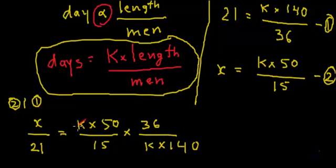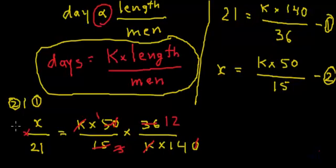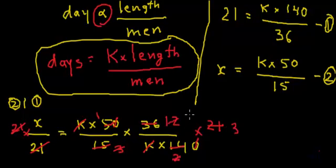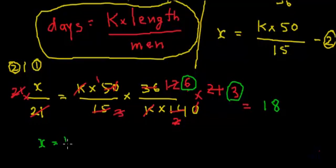Now k cancels with k. Simplifying: 50 and 140 — the zero cancels, giving 5 over 14; and 36 over 15 simplifies — 5 threes are 15, 3 ones are 3, 3 twos are 6. Multiplying both sides by 21, the 21s cancel, and we get 7 twos are 14, 7 threes are 21, 2 sixes are 12. So the value of x is 6 multiplied by 3, which is 18. We get x = 18 days.